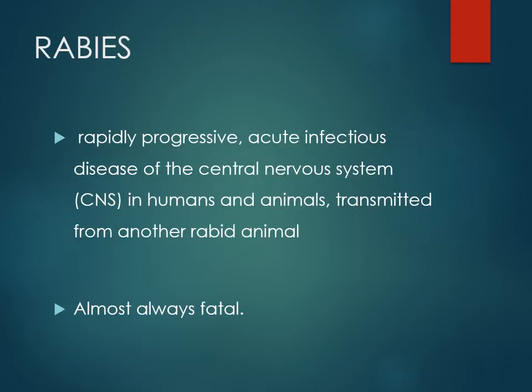Rabies is a rapidly progressive acute infectious disease of the central nervous system. It is transmitted mainly through the bite of a rabid animal — approximately 90 to 99 percent of cases are due to dog or monkey bites. It is almost always fatal; only a few cases have been saved, possibly because post-exposure prophylaxis was taken during the incubation period.